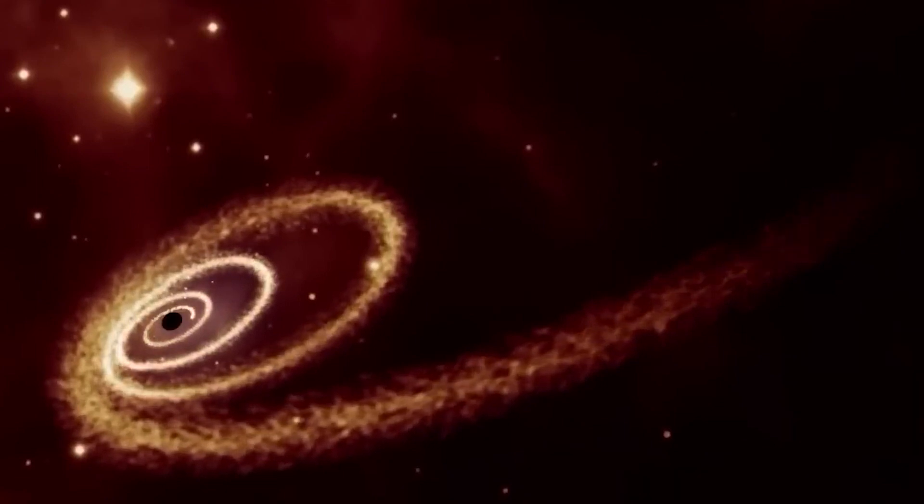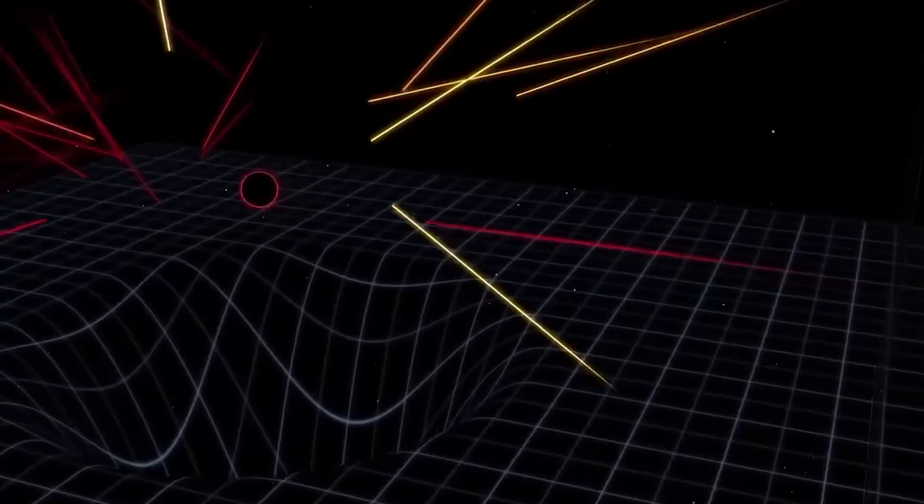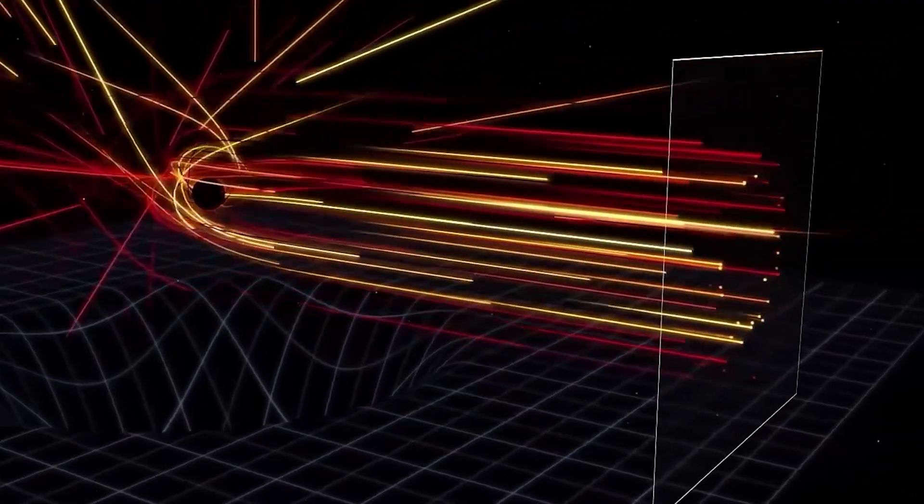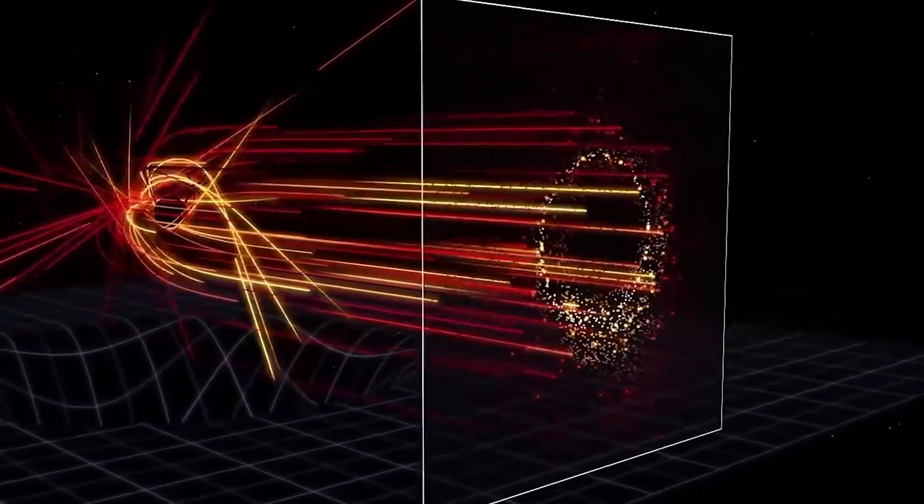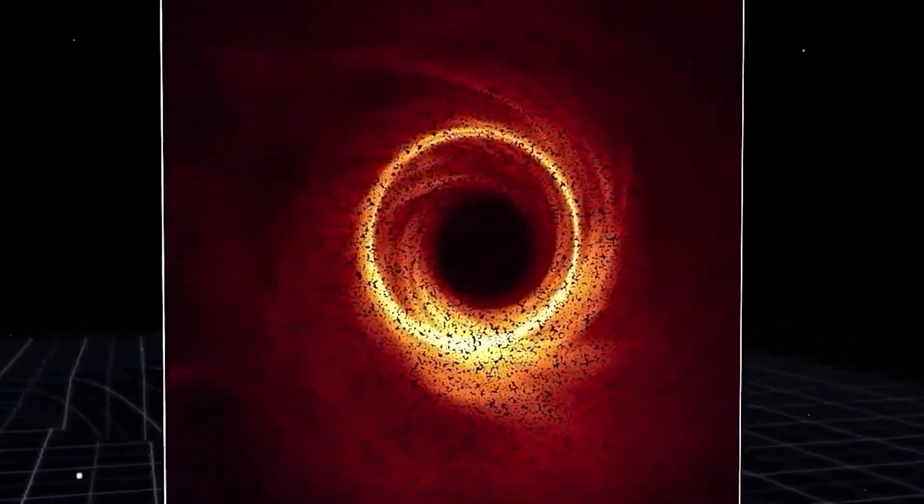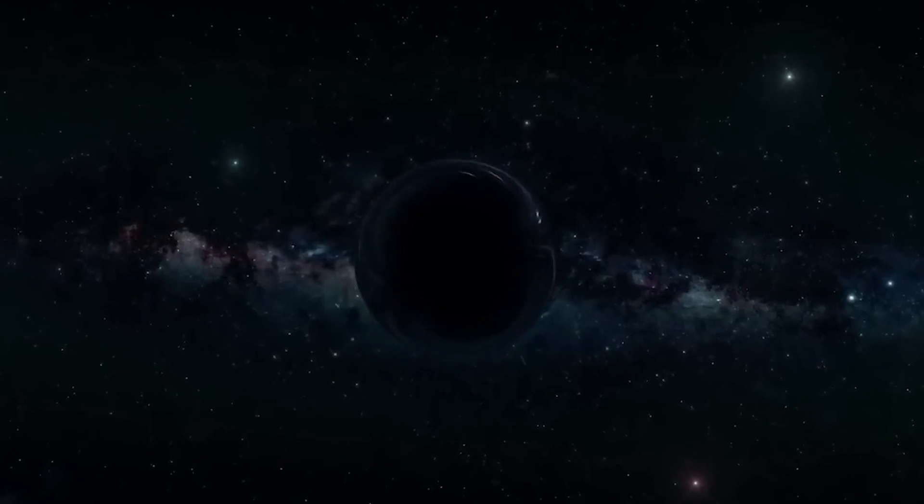The new image also reveals that the magnetic fields are highly ordered, with the magnetic field lines aligned in a very specific direction. This suggests that the magnetic fields are being influenced by the spin of the black hole, which is causing them to align in a particular way.